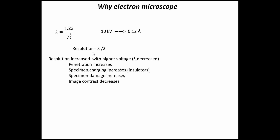The obvious question is: why don't we just increase the accelerated voltage to achieve lower and lower wavelength and thus higher and higher resolution? That is not feasible. Even though lambda will decrease with high acceleration, the image quality cannot be maintained because we have increased penetration — the electron will penetrate into the sample without coming back. There is also specimen charging, specimen damage, and image contrast issues.